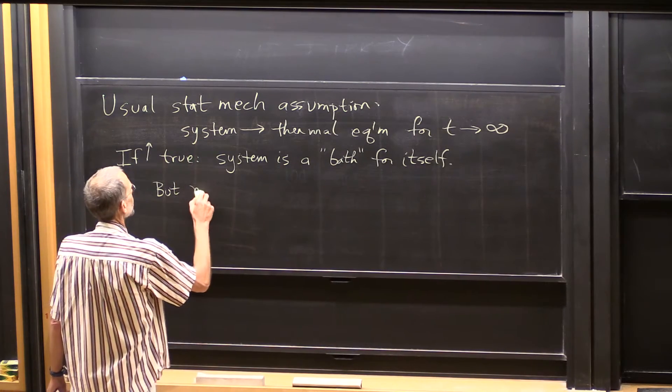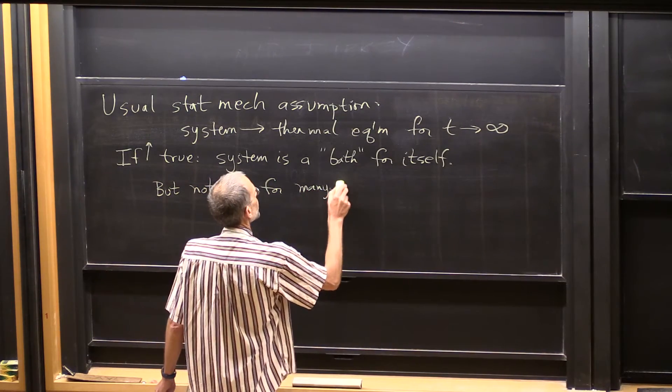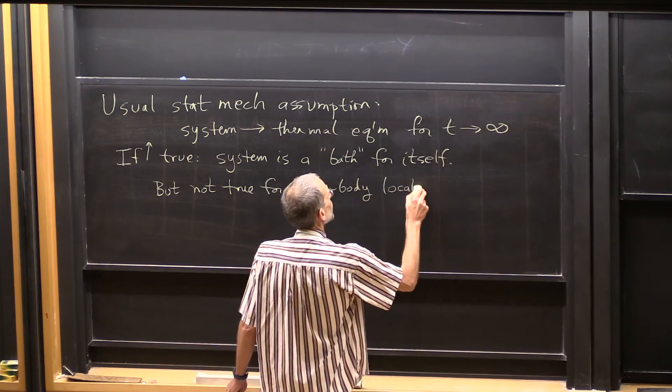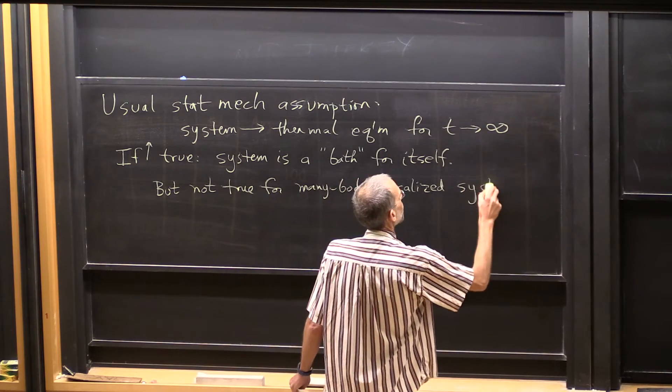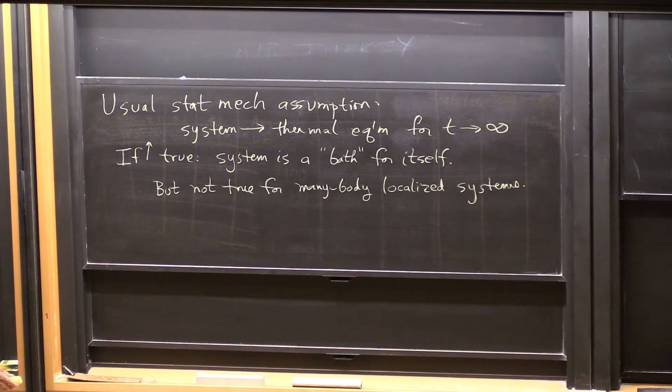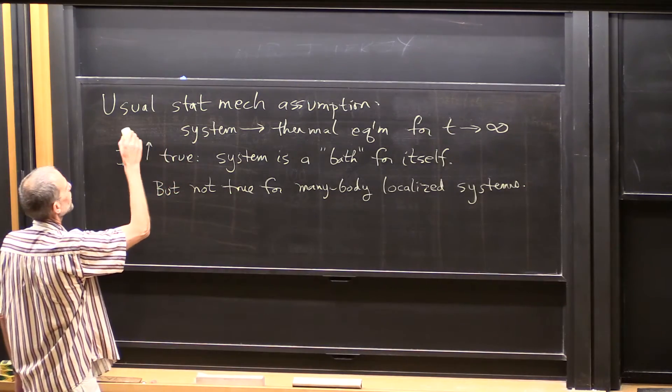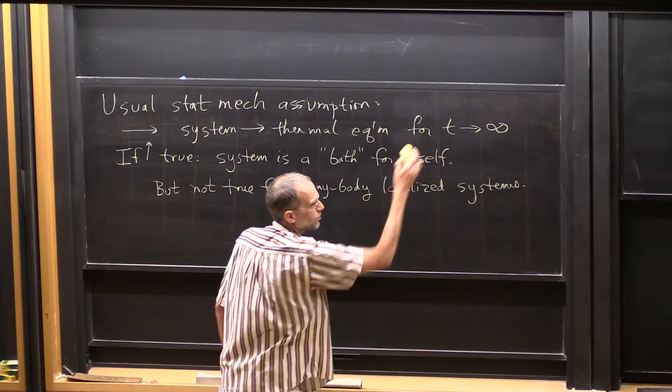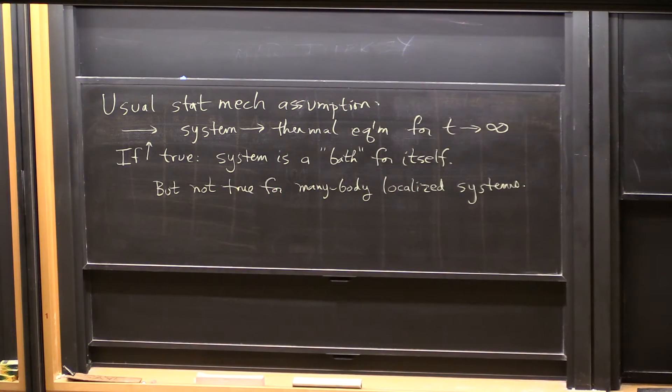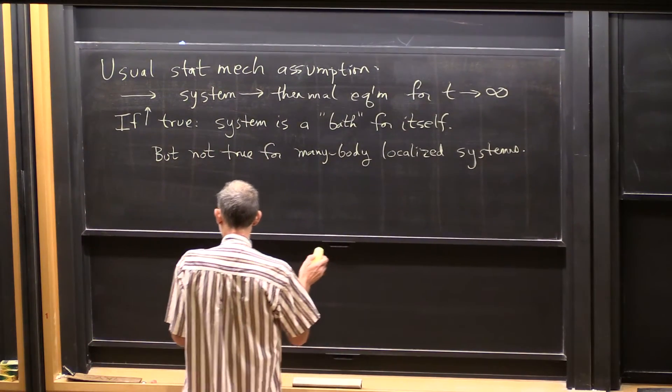But this assumption is not true for many-body localized systems. But the first question is not, is it true or is it not true, but what does it even mean? So this statement here, system goes to thermal equilibrium for time goes to infinity, those are a bunch of words, but their meaning is not, well, you could interpret those words in a way that's incorrect.